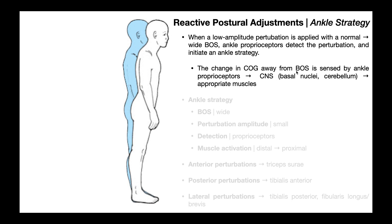Overall, the brain makes a decision or strategy about which muscles need to contract and which ones need to relax, in order to bring the person back to their original position — back where the center of gravity is directly over the base of support, instead of in this case anterior to the base of support.